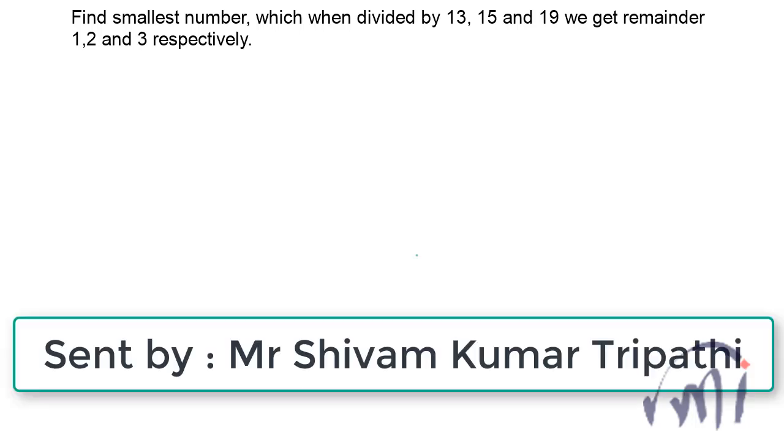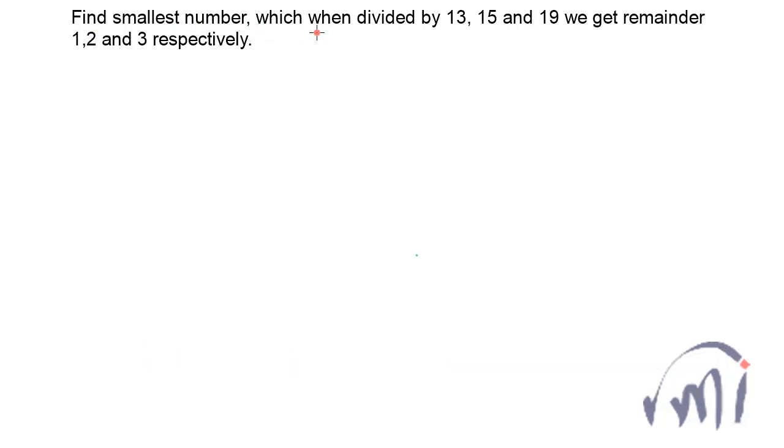Hi, so here we have a problem which was sent by Mr. Shivam Kumar Tripathi from India. In this problem we have to find the smallest number which when divided by 13, 15 and 19 we get the remainder 1, 2 and 3 respectively.